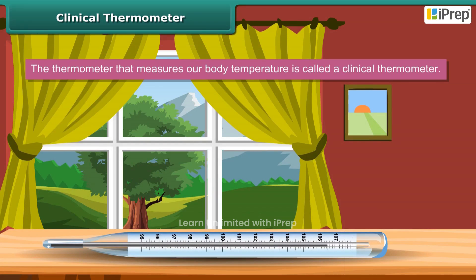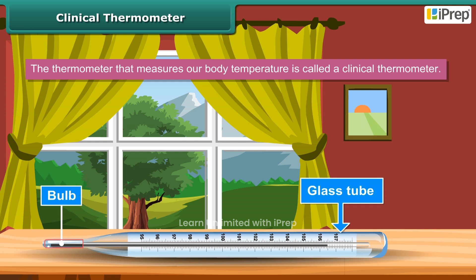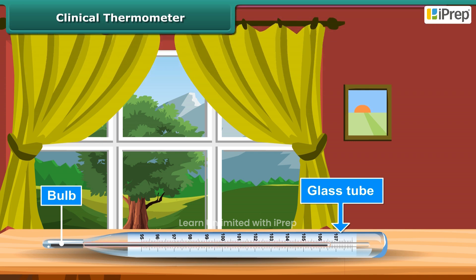A clinical thermometer consists of a long, narrow, uniform glass tube. It has a bulb at one end filled with mercury. Outside the bulb, a small shining thread of mercury can be seen.